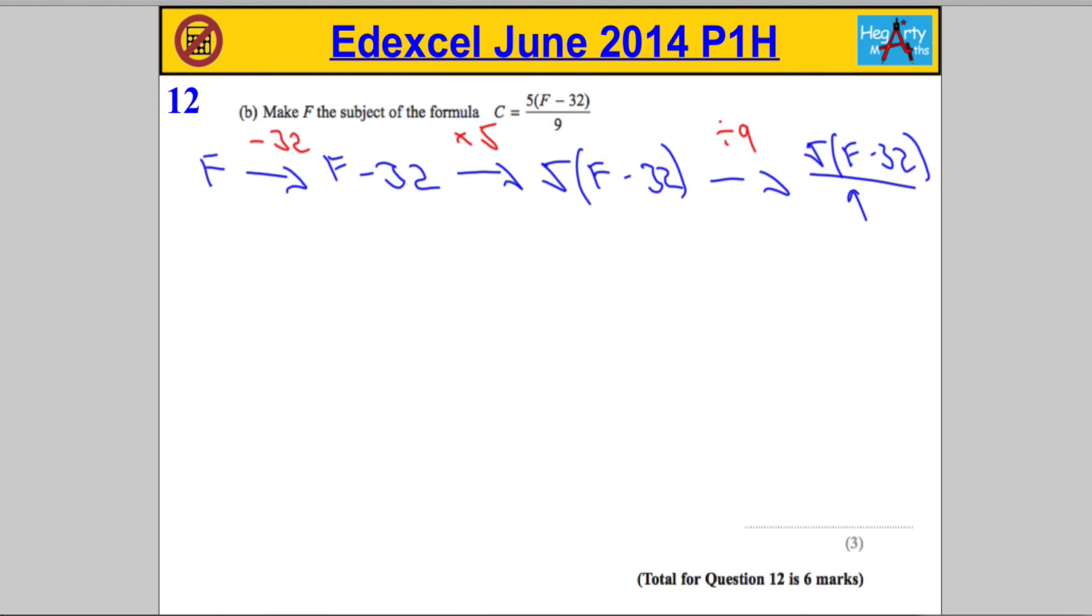Now that's going to help me do this problem. What are we going to do to both sides? We're going to work backwards. We're going to times by 9, then we're going to divide by 5, and then we're going to add on that 32. So I'm going to write the formula the other way around. We have 5 lots of F minus 32 over 9 is equal to C.